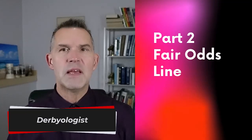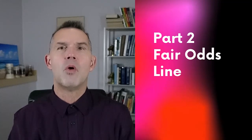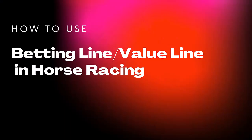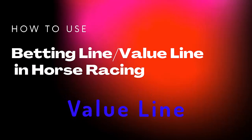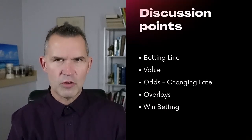Welcome back to the channel. We continue on with our handicapping series. In part one of this video we talked about what a morning line is, and this time we're going to take a look at a betting line and a value line. This is very important for handicapping because it allows you to determine a betting line, a value line, and look at odds and overlays in horse race betting.